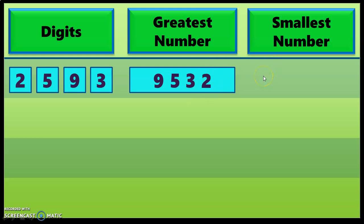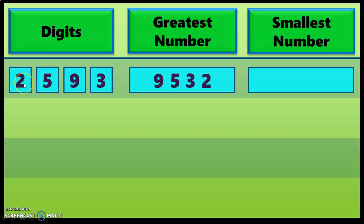Next, let us form the smallest four-digit number using these given four digits. To form the smallest number, arrange the digits from small to big. The smallest number is 2, then 3, then 5, and the biggest number is 9. So the smallest four-digit number that can be formed is 2359.